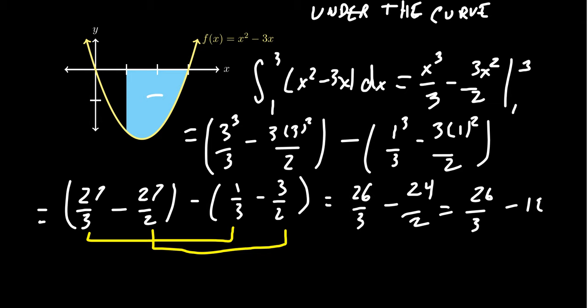So finding common denominator, we'll get 3. So we can make this 36/3. And so finishing up this calculation, we end up with -10/3.